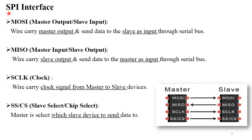The next point is the SPI interface. In this diagram, this is master and slave performing communication using SPI protocol. The first pin is MOSI, which stands for master output slave input. The second one, MISO, is master input slave output. Then SCLK means serial clock, and SS/CS means slave select and chip select. These pins are present in both master and slave devices, and four cables are used for communication. Master sends output data to the slave, and the slave receives this as input — that's why it's called master output slave input, with the arrow pointing to the slave direction.